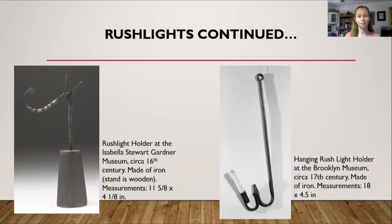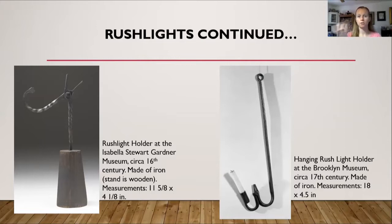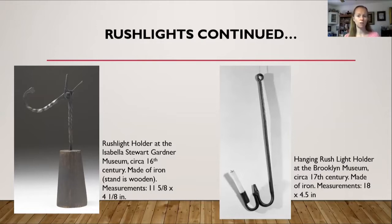Most rush light holders found in museums are like these examples where you have the nips — think of something that looks like pliers. The picture on the left is a rush light holder from about the 16th century, made of iron on a wooden stand — simply a pair of pliers with a little hook to pull it apart and close. On the right is an interesting one: most rush light holders tend to sit on a nightstand or table, but this one on the right is a hanging rush light from the Brooklyn Museum, from about the 17th century, made of iron.